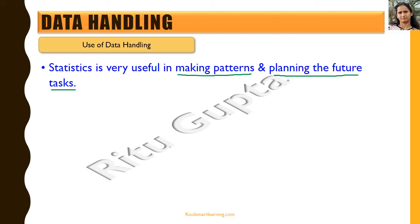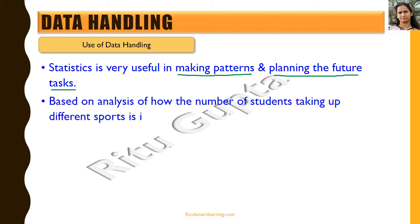The important thing is — why would I want to collect rainfall and temperature data for past few months or years and make patterns out of it if it is not of any use? The answer is that it actually helps us in planning our future tasks and arrangements.